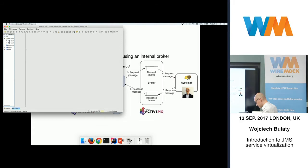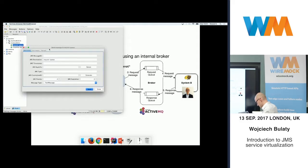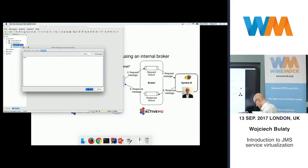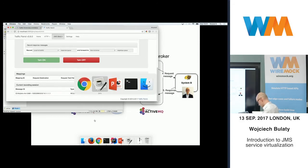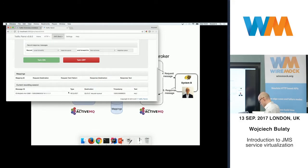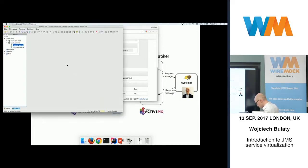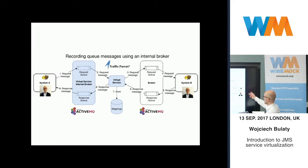We can start sending messages. I'm going to pretend to be System A using Hermes JMS and send a request message to the request queue — that's arrow one. I go to the request queue, new message, payload: 'request one'. Now we expect the virtual service to have noticed the request message and also forwarded it to the request queue on the original broker. There we go — it's there in the current recording session. And in Hermes JMS looking at the local ActiveMQ instance, on the request queue there is 'request one'.